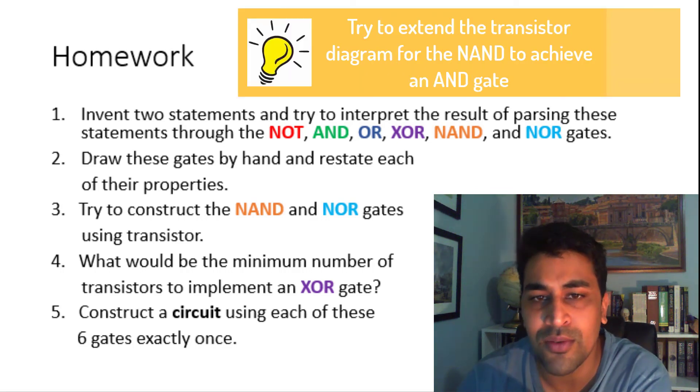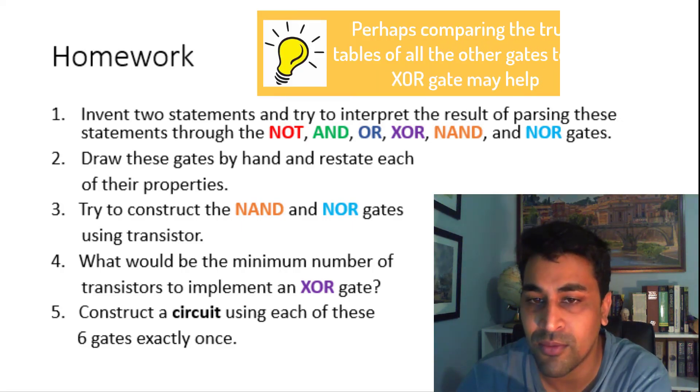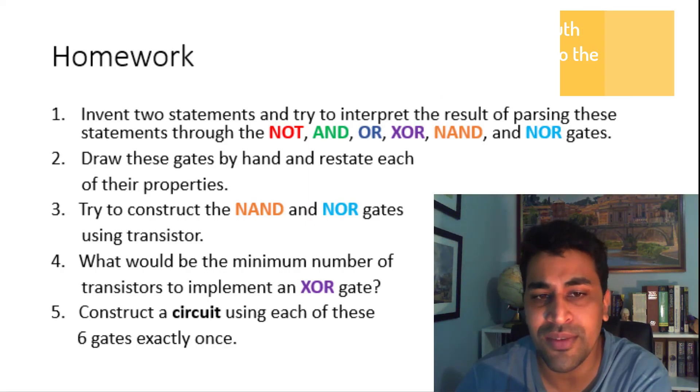Try to construct the NAND and NOR gates using the transistor, and then see if you can do it with an AND and OR gate. After doing this, try to figure out what is the minimum number of transistors that you would need to implement an XOR gate. Finally, use each of these six gates exactly once to construct a circuit.